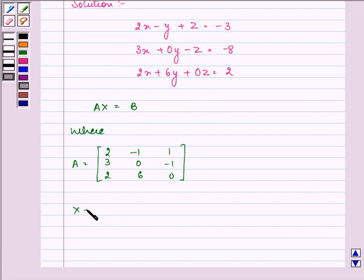And we have matrix X as x, y, z, and matrix B as minus 3, minus 8, and 2.